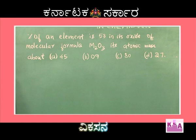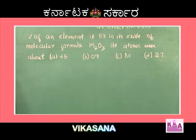Atomic mass is about option A: 45, option B: 9, option C: 80, and option D: 27.